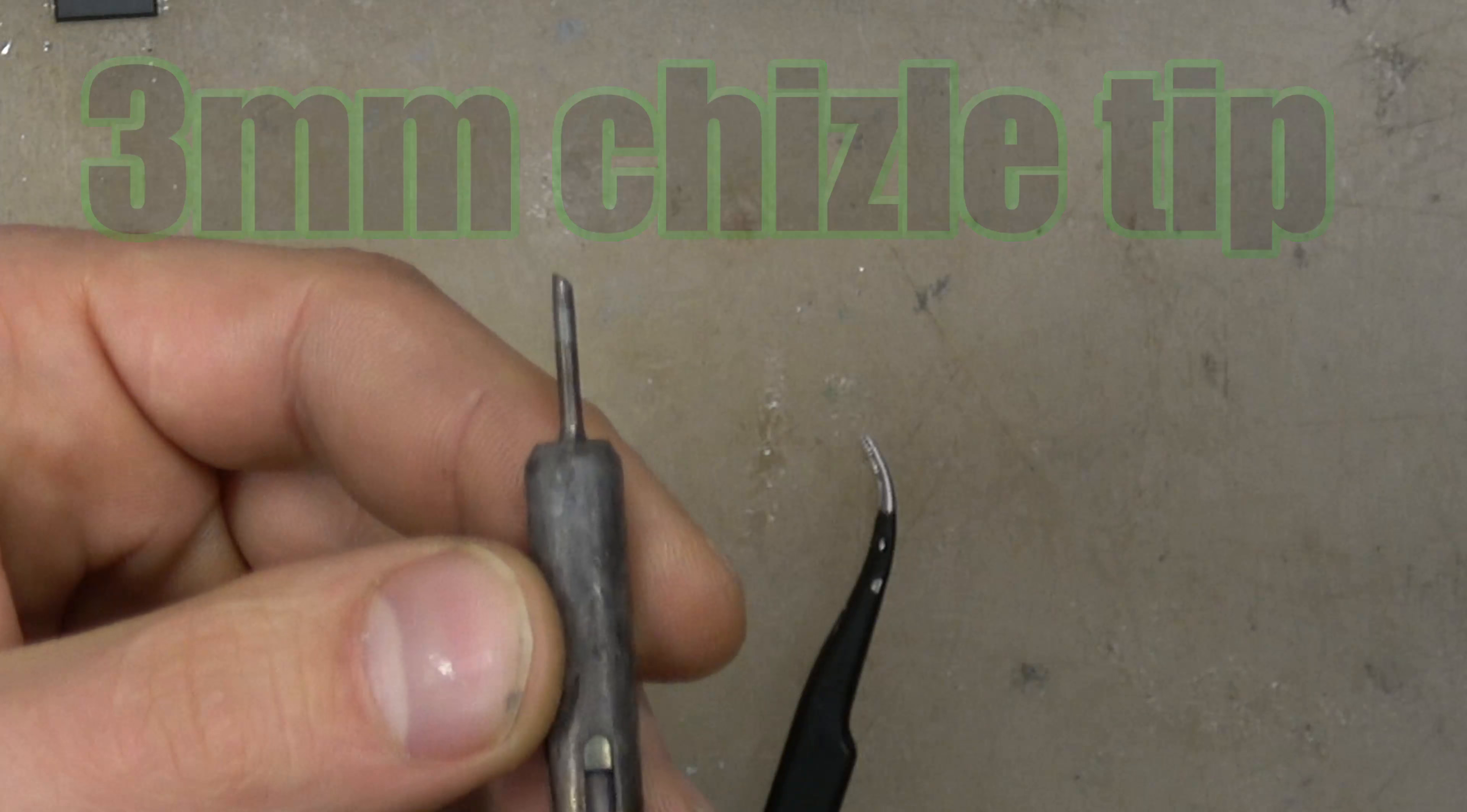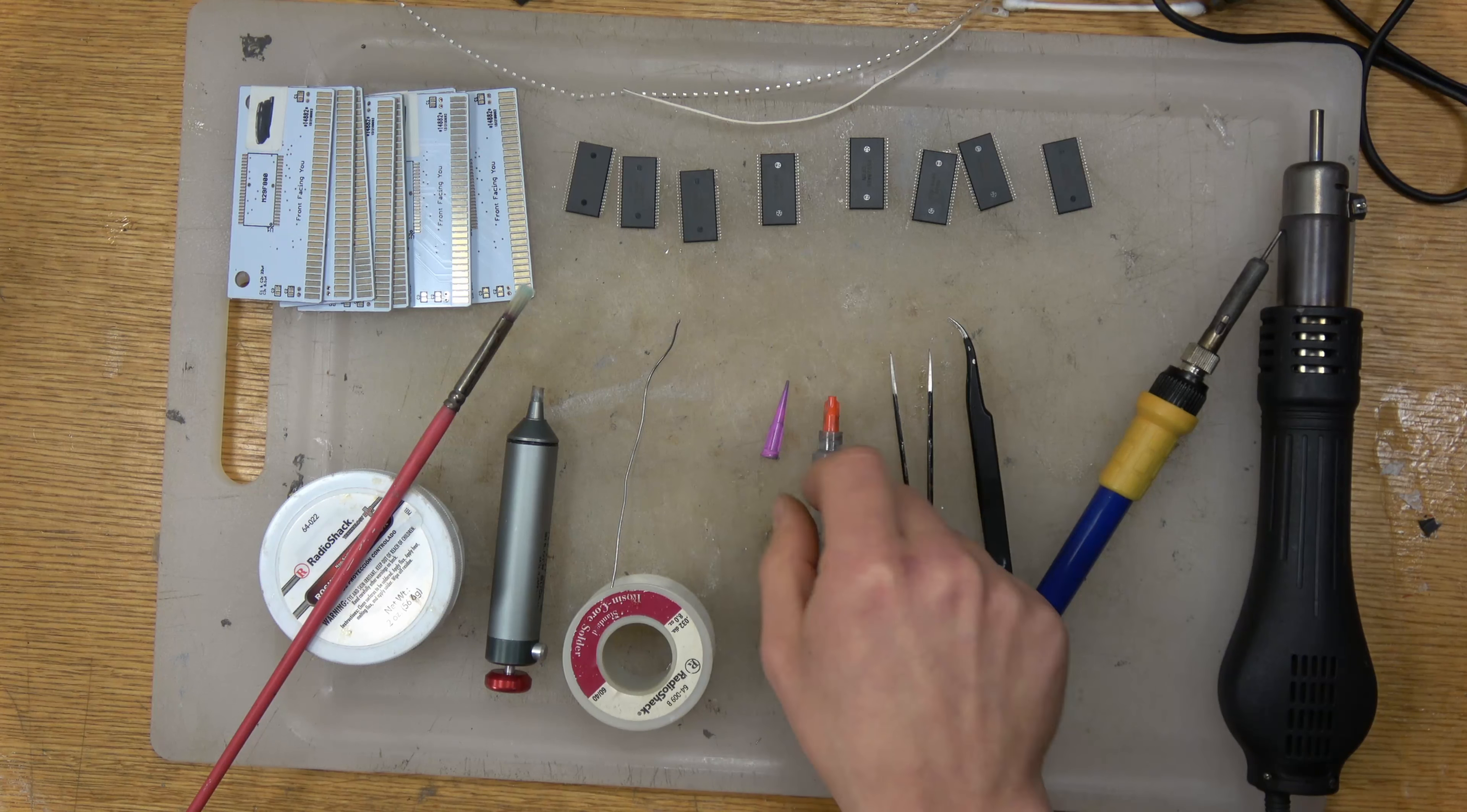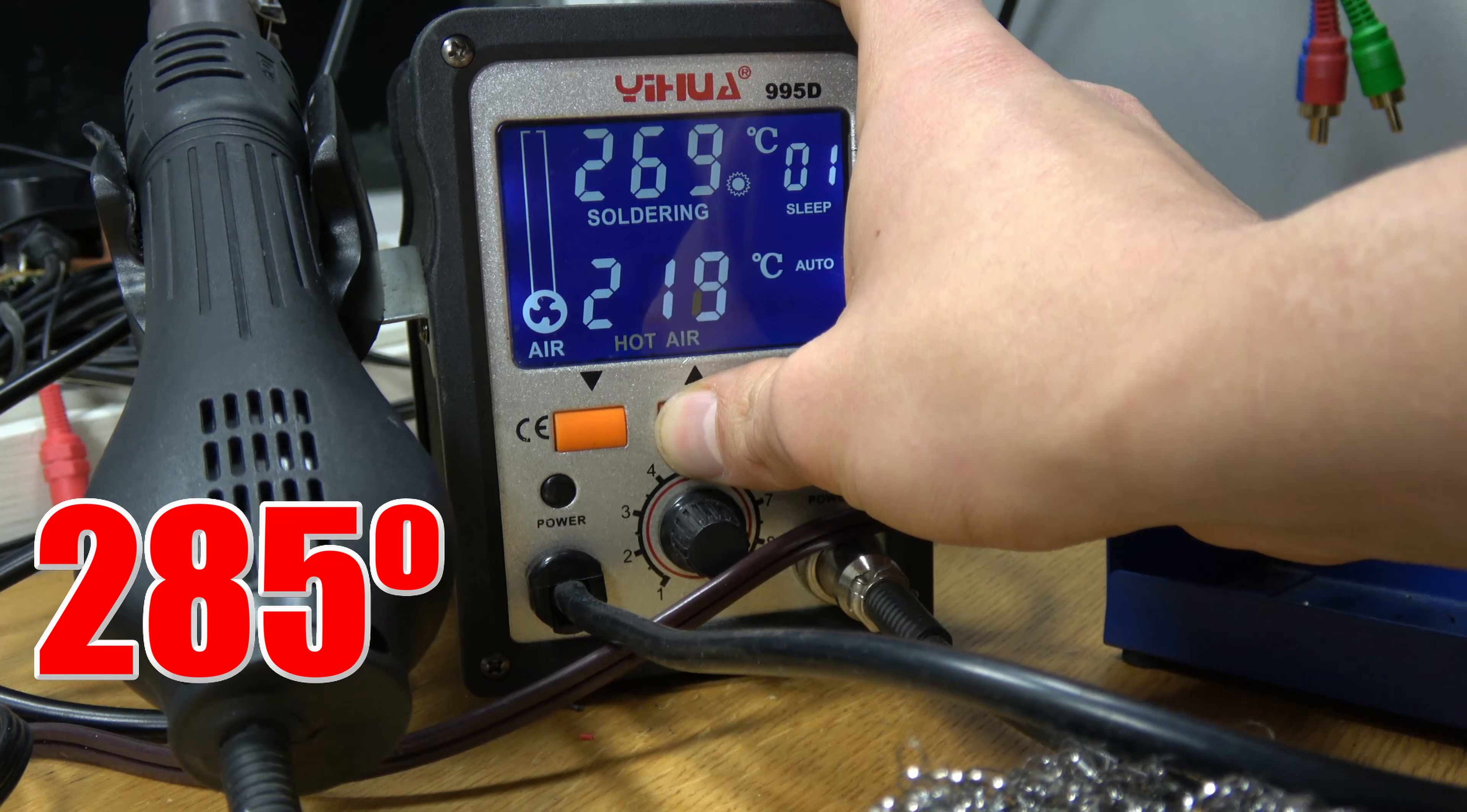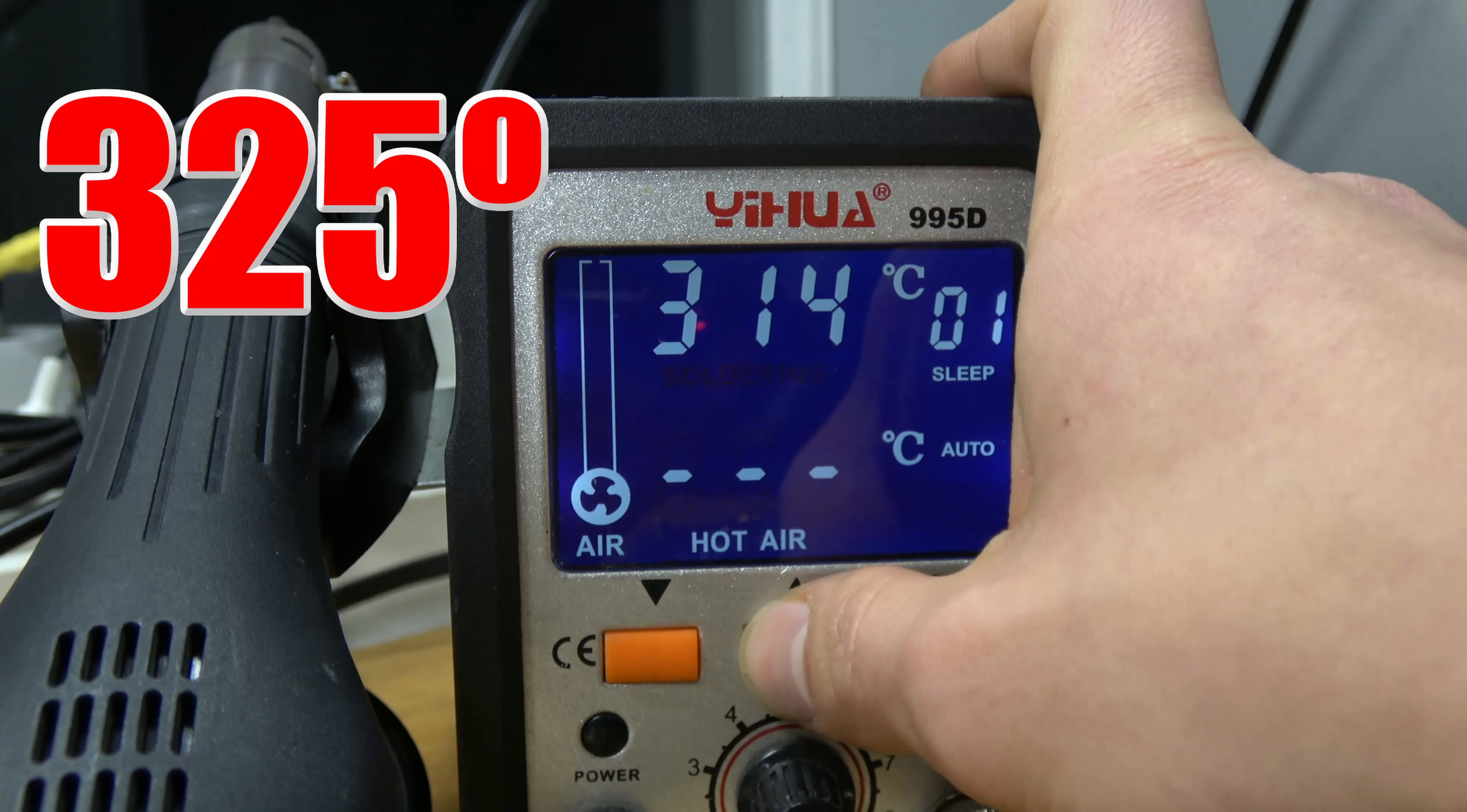I'll be using the traditional soldering iron tip as well, various different tweezers, solder paste in addition to regular solder, a solder sucker on hand, and most importantly the flux with a nice little paintbrush. The temperatures we're using are 285 degrees for the hot air at level 7 to 8, and our iron at 325 degrees.